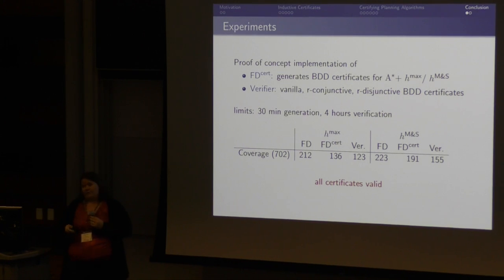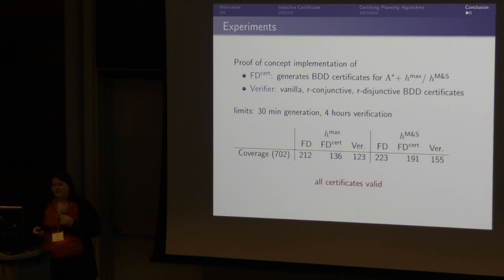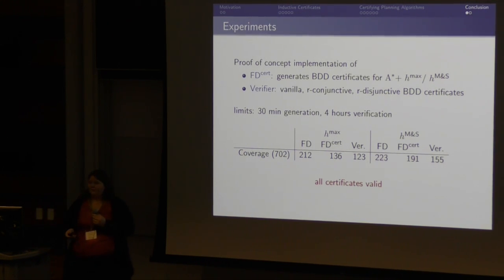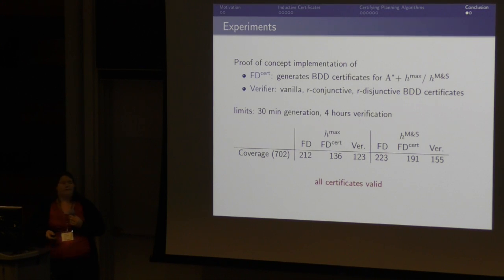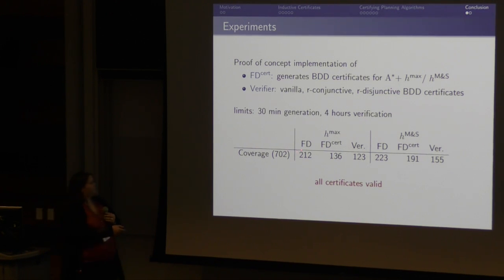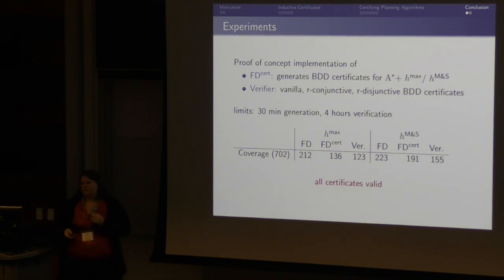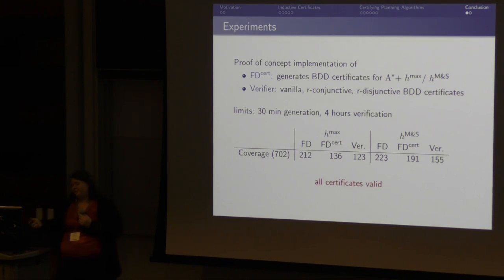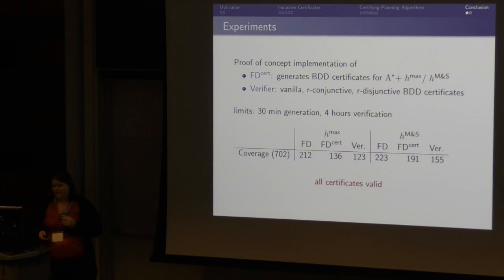We implemented a certifying version of FAS Downward which can generate BDD certificates for A* search with Hmax or the merge-and-shrink heuristic. We also implemented a verifier which can verify vanilla, conjunctive, and disjunctive BDD certificates. We ran experiments with a 30-minute limit for generation and a four-hour limit for verification. In at least more than half the cases, FAS Downward with certificate generation could produce a certificate within the same time limit, and in most cases it could also verify this certificate. Most importantly, all the certificates are valid.